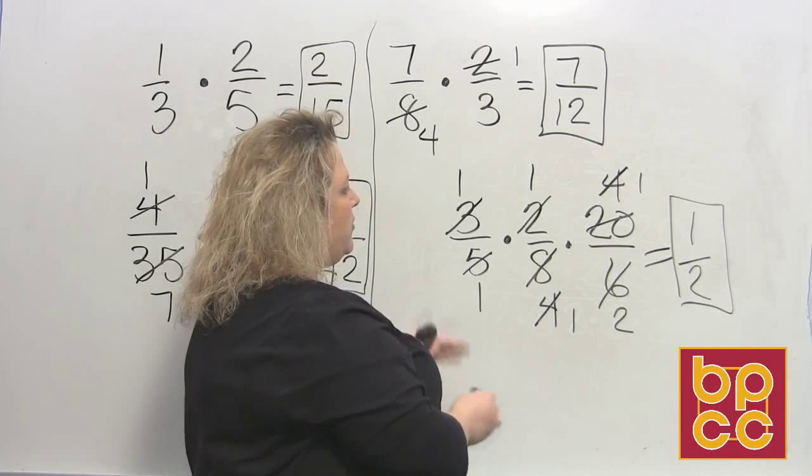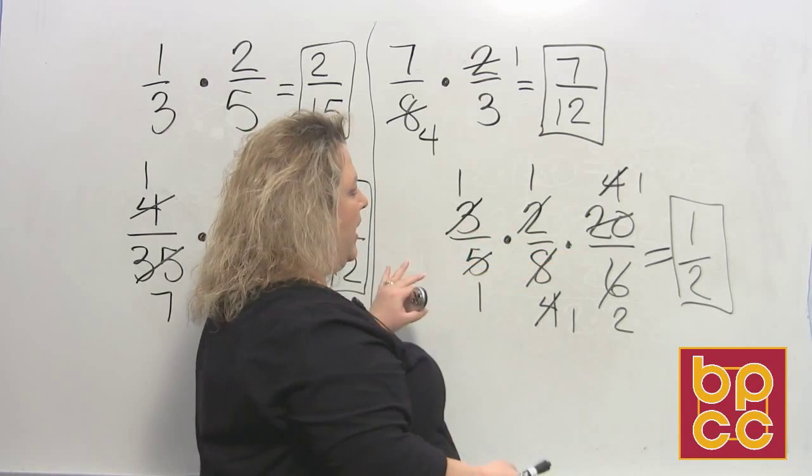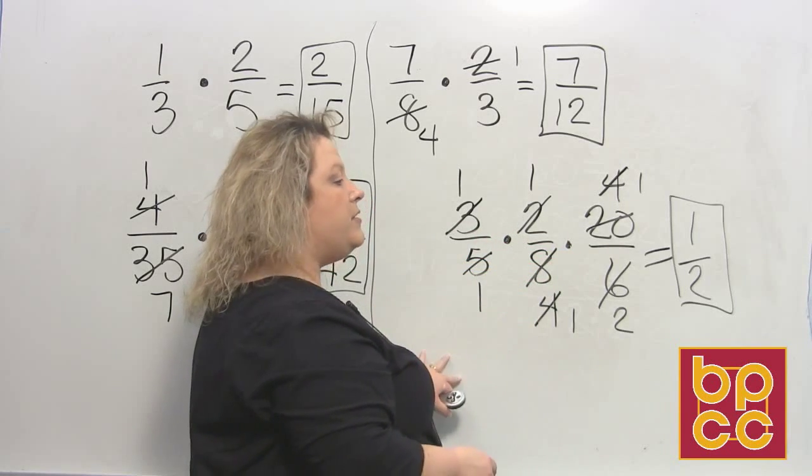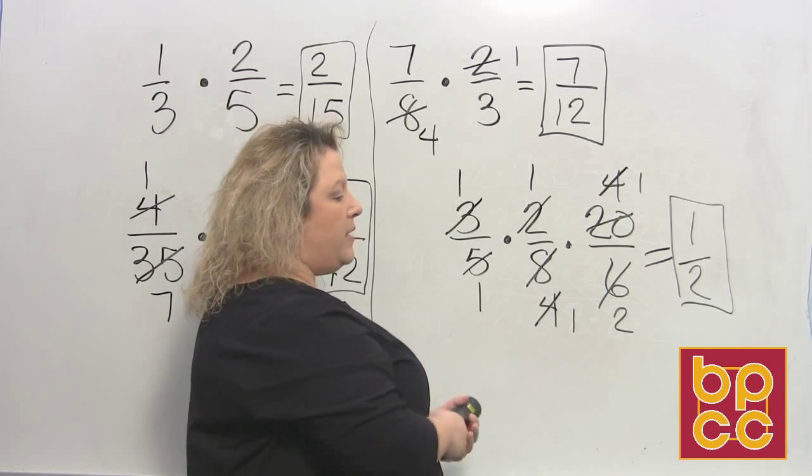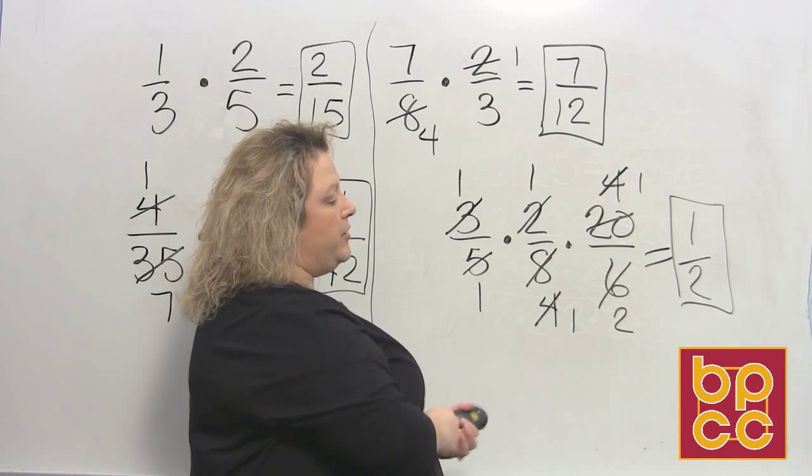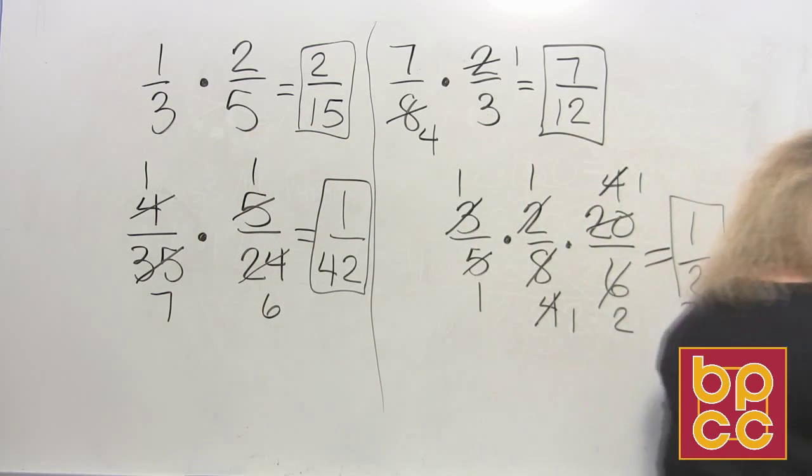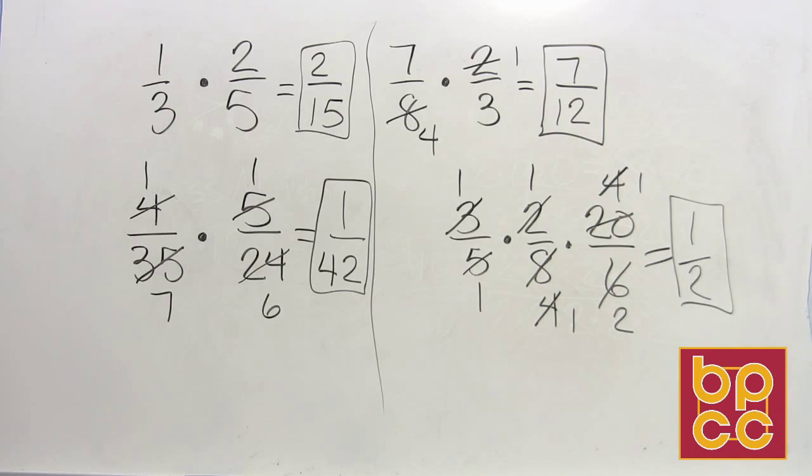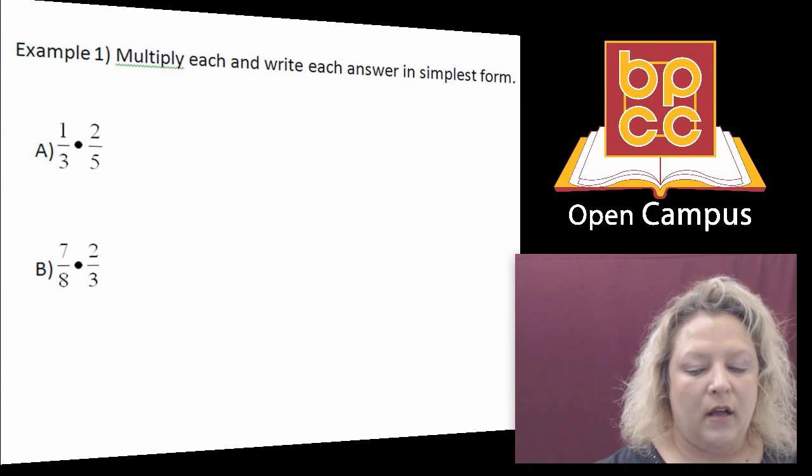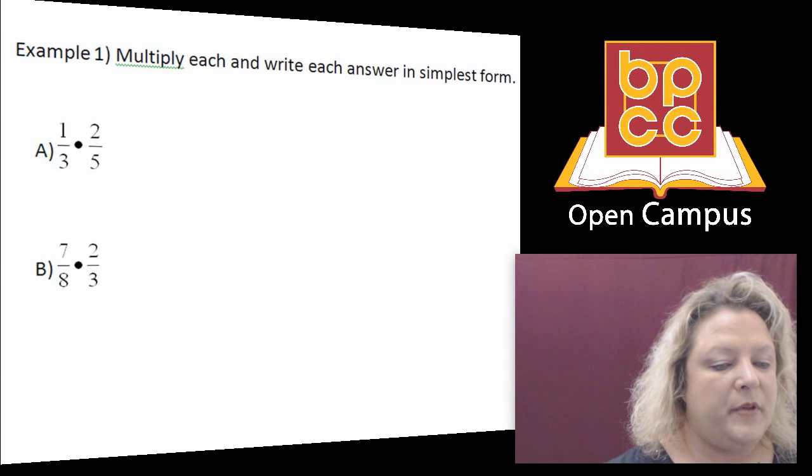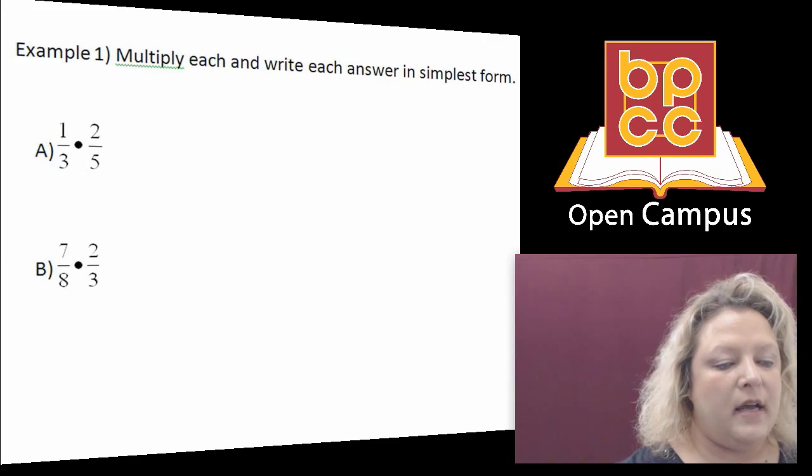Now if you wanted to multiply all the top together and all the bottom together and then reduce the answer, that's fine. It's just that you'd be working with a huge number, and sometimes it makes it harder to see when you're doing reducing. All right, that's all I have for us to do today for multiplying fractions. Our next step will be multiplying mixed numbers.